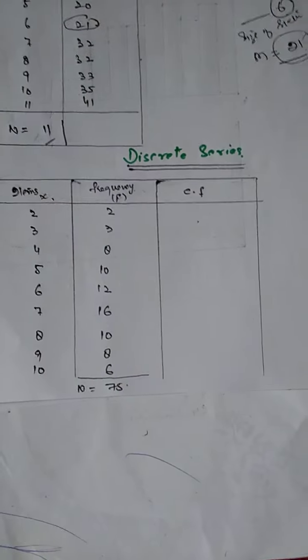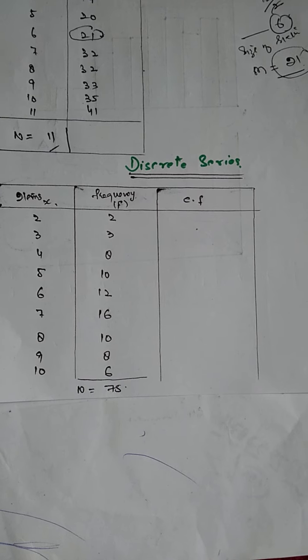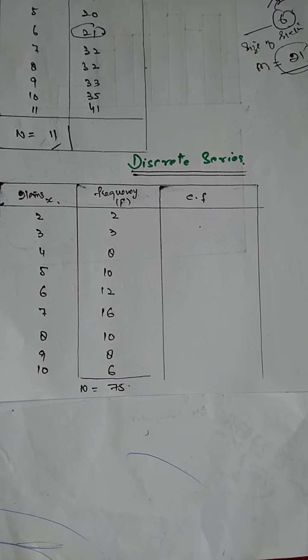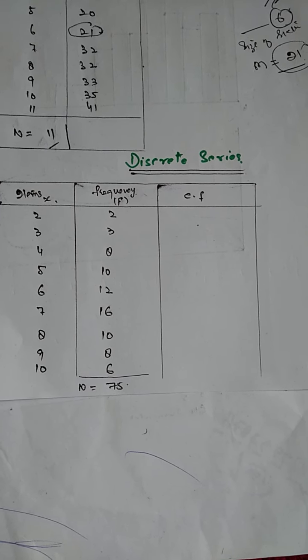Look, we have taken a discrete series here. Now you know that discrete series is that series in which there is frequency, it's a frequency array.